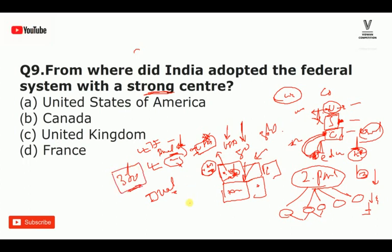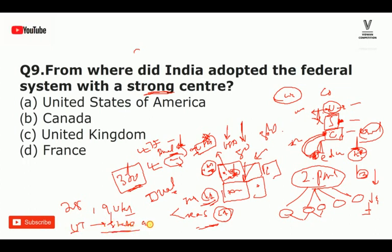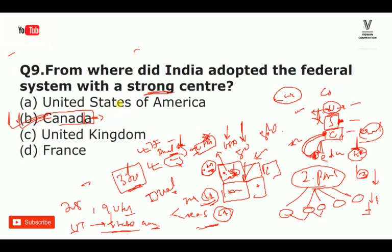Among union territories, Ladakh does not have a legislative assembly, but Jammu Kashmir does have a legislative assembly. Right now India has 28 states and 9 union territories. The answer to the question about federal system with strong center is Canada. Canada is a federal system with a strong center.